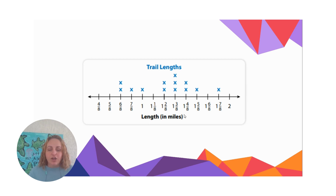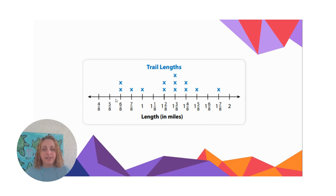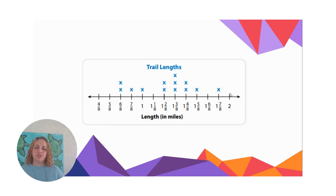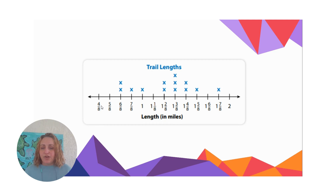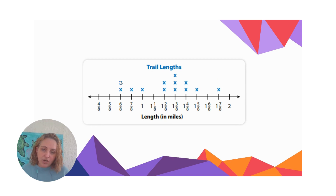We can also see that the longest trail is one and seven eighths miles, because that's the biggest number on the line plot that has an x over top of it. My number line goes down to four eighths and up to two, but notice the two doesn't have any x's — no trails are two miles long. Four eighths and five eighths also have no x's, meaning no trails are those lengths. Sometimes data starts right at the smallest number; sometimes you'll see a few dashes before the data begins.